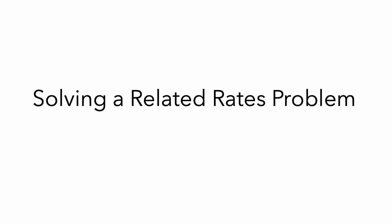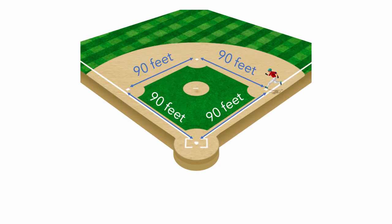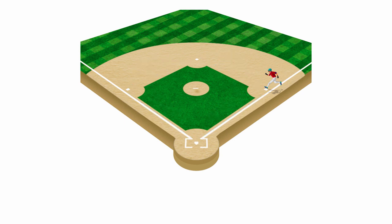In this video, we will work through a more complicated related rates problem. A baseball diamond is a square with each side 90 feet in length. Suppose that at the exact moment the ball is hit, Luke runs from first base to second base at a constant rate of 20.7 feet per second.